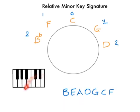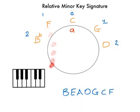So we find the note C and we go down three semitones: one, two, three — to A. So C has a relative minor of A. Using this one here, F would be here. One, two, three — that would mean this is a D.